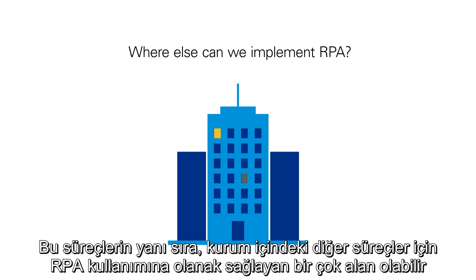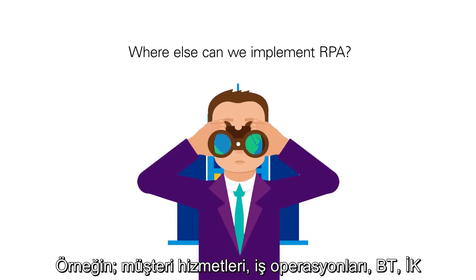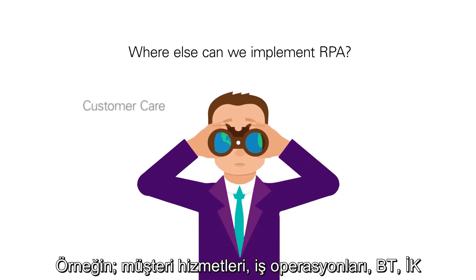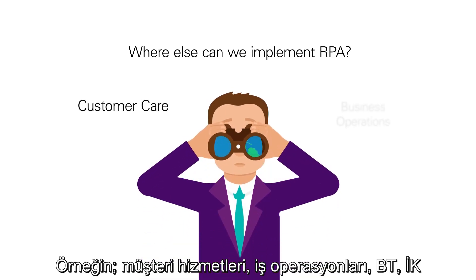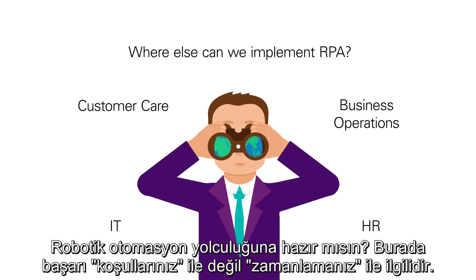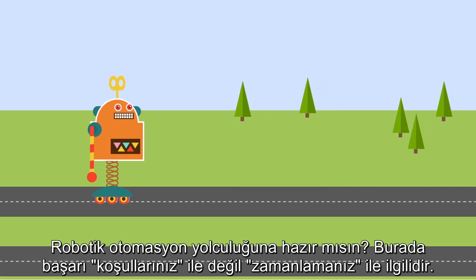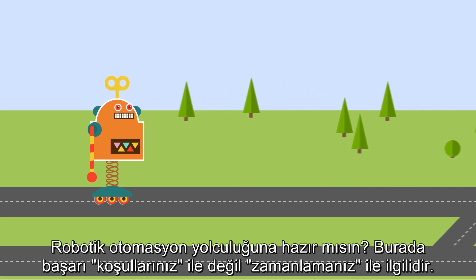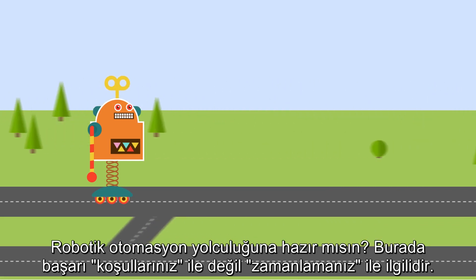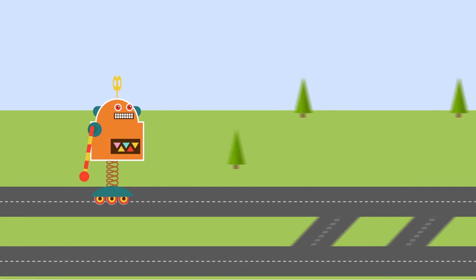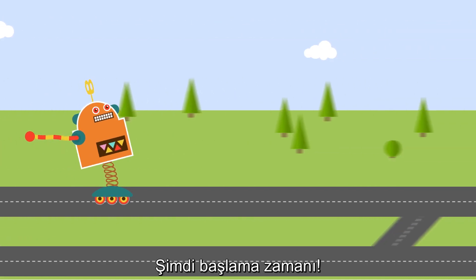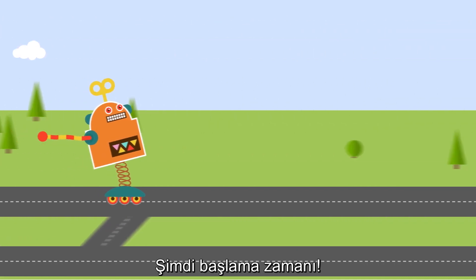Next to finance processes, there are many other opportunities for RPA that exist across other functions within the organization. Examples include customer care, business operations, IT, and HR. So are you on the road to robotic automation success? It's not about if, but when — now is the time to get started.